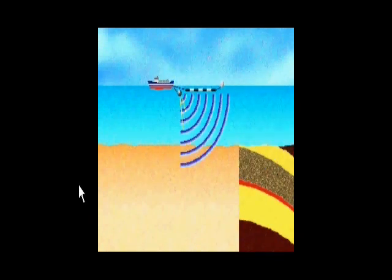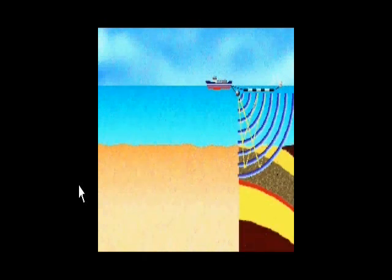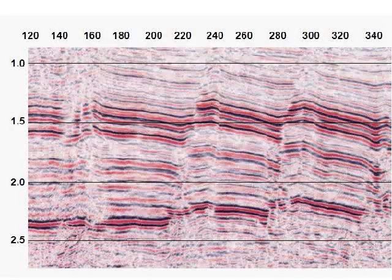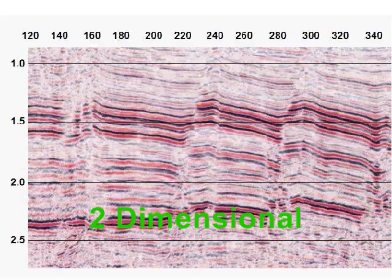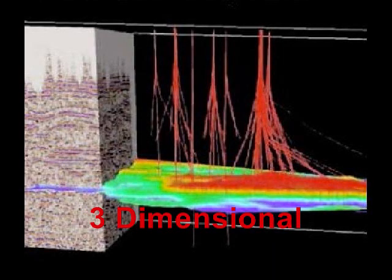As we move our source and receivers around on the surface and take new echo measurements, we can collect data that is then fed into computers, allowing us to describe the shape of the rock formations below over a large area. We can illustrate this data on 2D or two-dimensional maps, as well as in 3D (three-dimensional) and 4D (four-dimensional) maps.